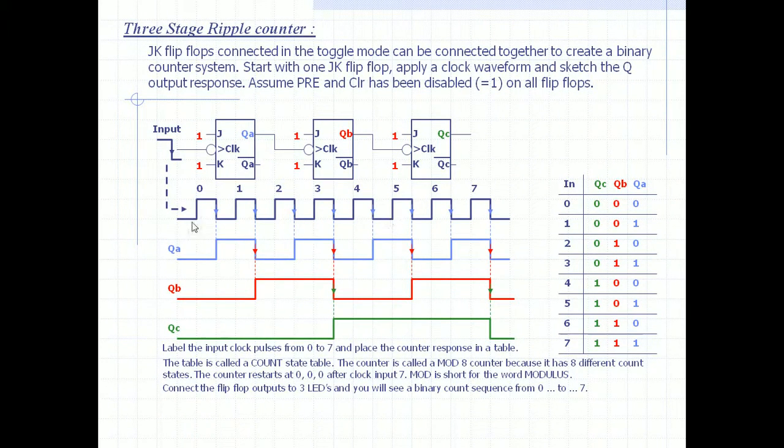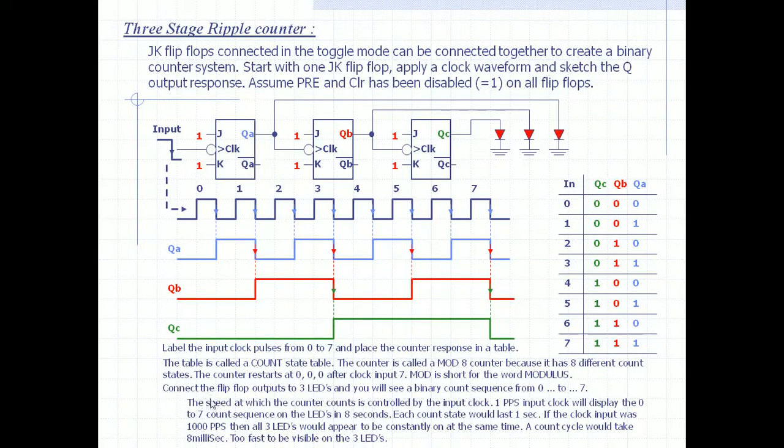If you connect the flip-flop outputs to three LEDs, you will see a binary count sequence from zero to seven, like this. These are the blinking LEDs. The speed at which this counter counts is actually controlled by the input clock. One PPS, that is one pulse per second input clock,